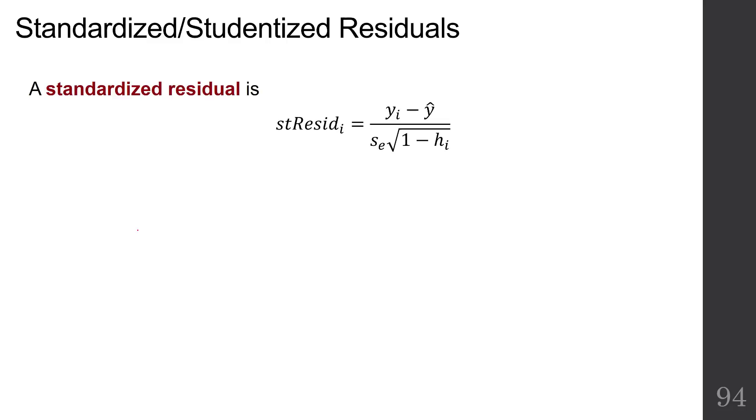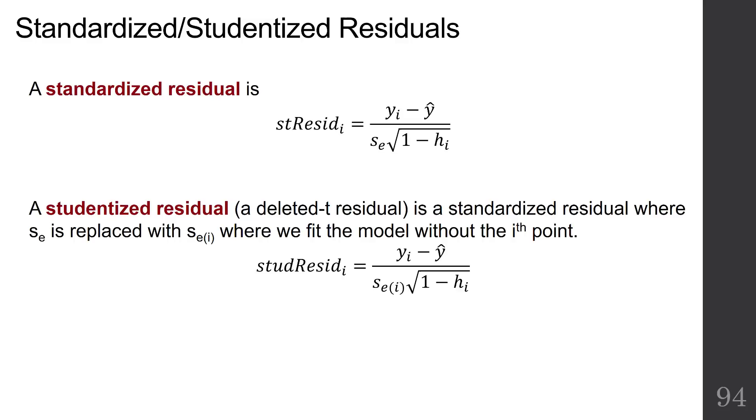Now we're going to talk about residuals, this new idea of a standardized and then a studentized residual. Remember what a regular old residual is - it's the observed y minus the predicted y. You can have positive or negative residuals. Well, a standardized residual is when we divide that difference by the standard error of the regression and the square root of 1 minus the thing from the hat matrix from the leverages. So we standardize it with that denominator. And then a studentized residual, otherwise known as a deleted t residual, is the same thing as a standardized residual, except the standard error is calculated on the regression with everything except for the point in question.